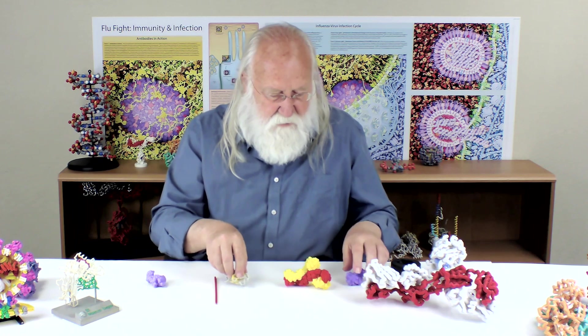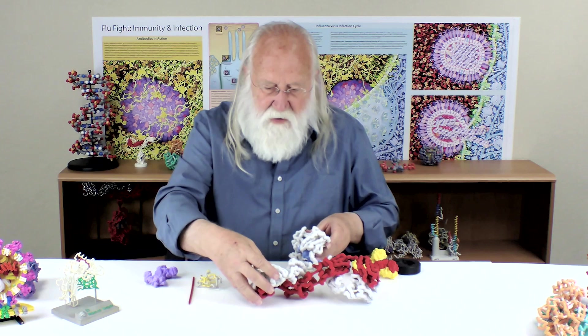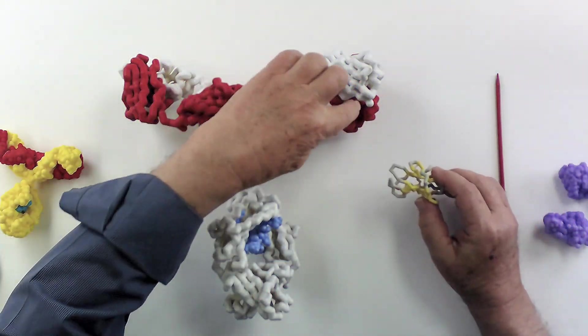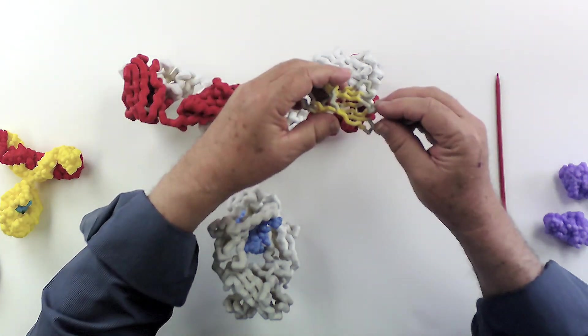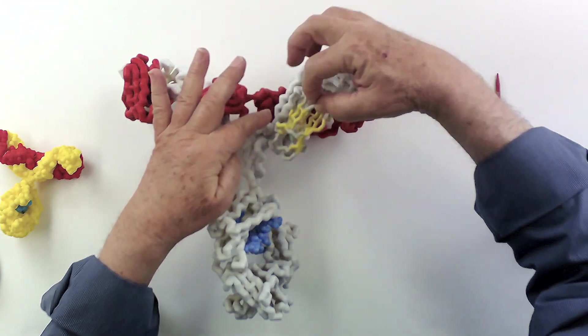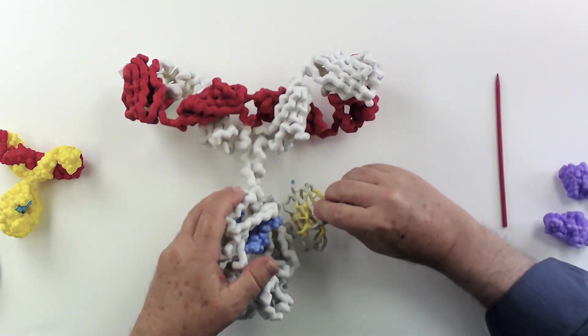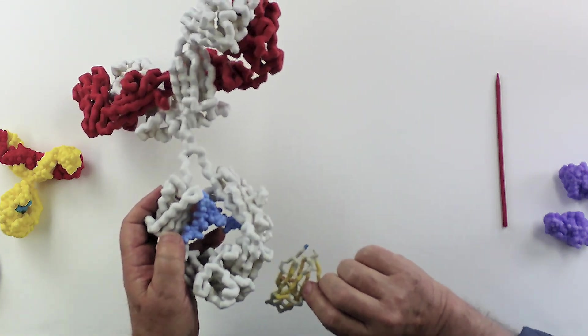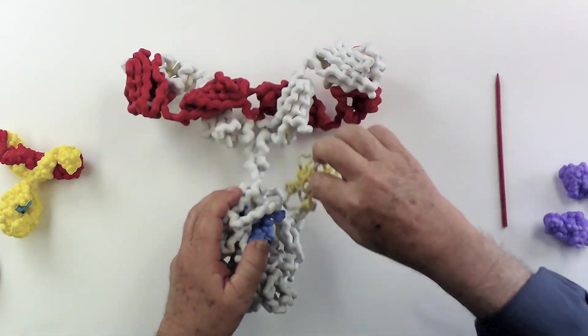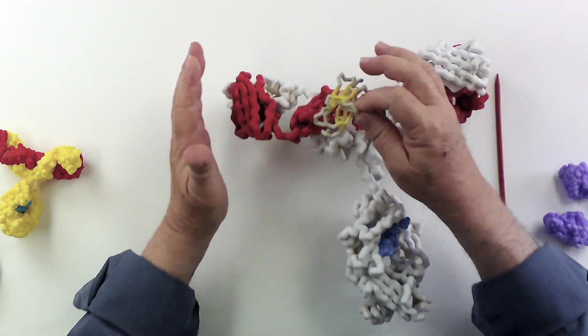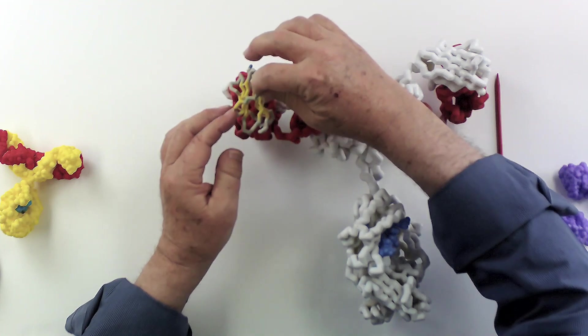You can actually see this maybe a little bit better in this big model of an antibody that we have here. This is also displayed as an alpha carbon backbone model. So you can see that there's an immunoglobulin fold here linked to another immunoglobulin fold here. Here's the third immunoglobulin fold, and here's the fourth immunoglobulin fold. And so there are four of these in a heavy chain. And then if we go over here to one of the light chains, here's an immunoglobulin fold, here's an immunoglobulin fold.